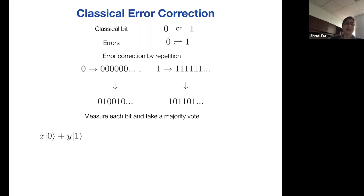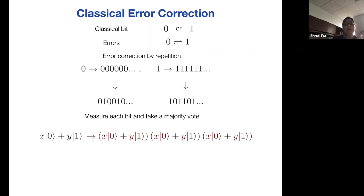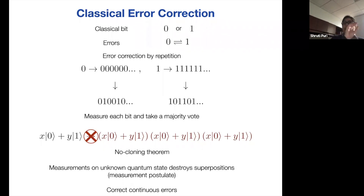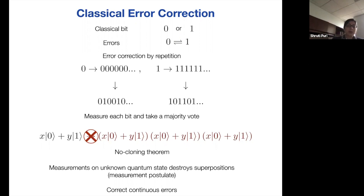If you blindly follow classical error correction, you'd want to protect an unknown quantum state — a superposition of |0⟩ and |1⟩ where we don't know the coefficients. If you follow classical error correction blindly, you'd try to copy the state into three physical qubits, but unfortunately this is not allowed due to the no-cloning theorem. Moreover, you cannot go and measure the state of each qubit because measurements destroy superpositions. We also want to correct for continuous errors, not just discrete ones. So how does quantum error correction work given the no-cloning theorem, the measurement postulate, and continuous errors?